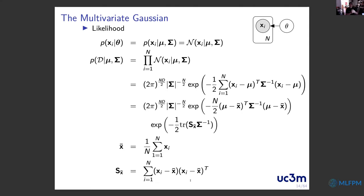The third building block is real-valued data, for which we use a multivariate Gaussian likelihood, defined by mean vector mu and covariance matrix sigma. The likelihood for the whole dataset can be expressed in a compact form involving the empirical mean and empirical covariance matrix.